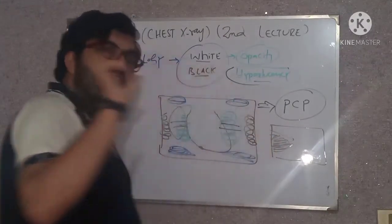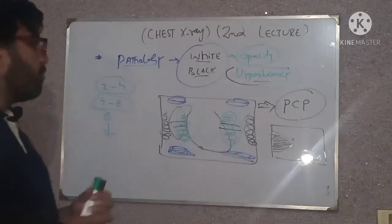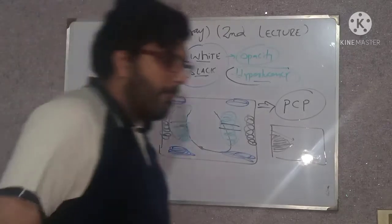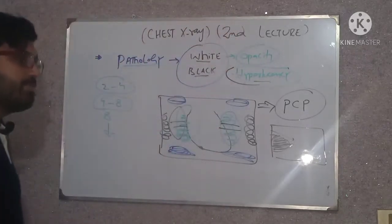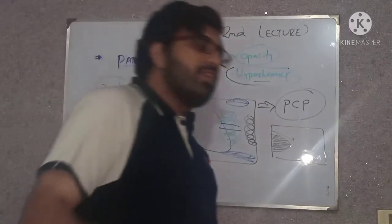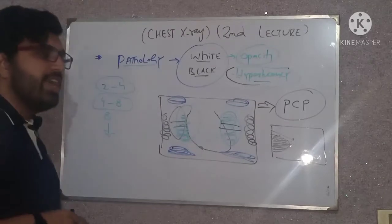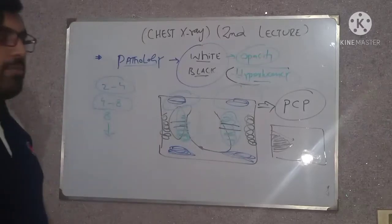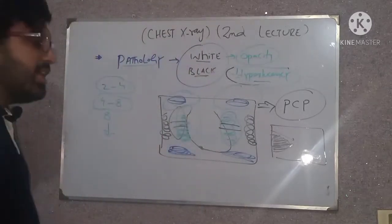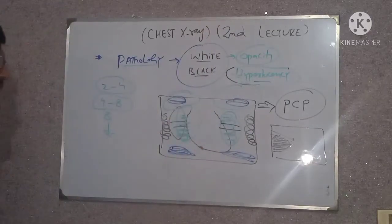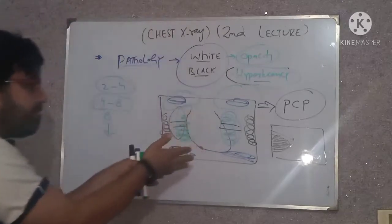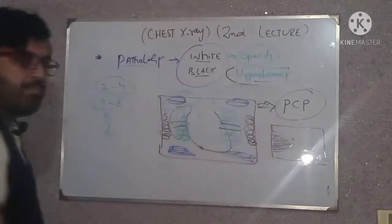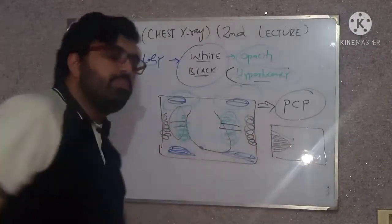A 35-year-old female with significant weight loss, presenting with fever and night sweats for the last one month — on X-ray there are bilateral apical opacities. The answer is TB. So you can diagnose acute pulmonary edema, CCF, Pneumocystis pneumonia, COVID pneumonia, IPF, and pleural effusion all based on location.